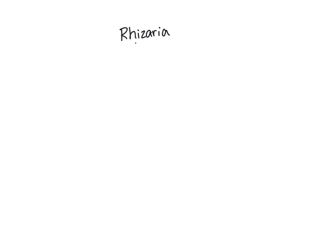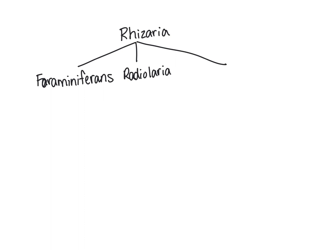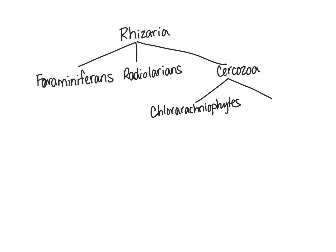To summarize this group: we have the supergroup Rhizaria, which can be broken down into three major subgroups — the foraminiferans, the radiolarians, and the cercozoa. The cercozoa are further broken down into two subgroups: the chlorarachneophytes and the vampyrellids.